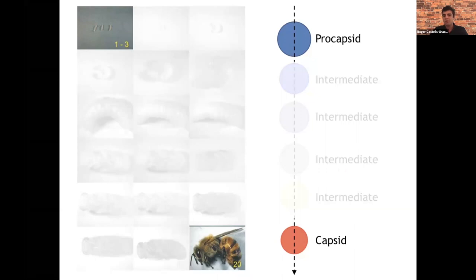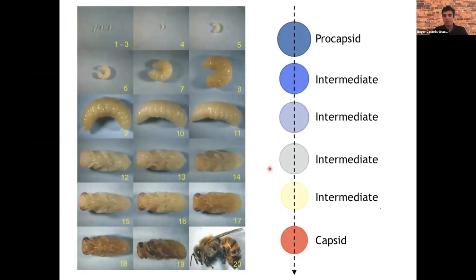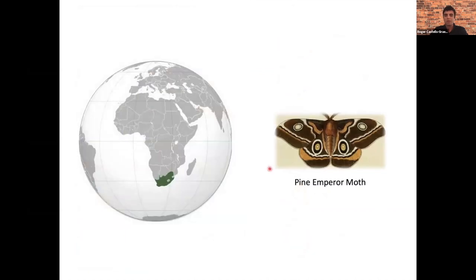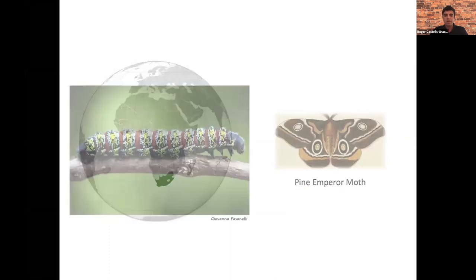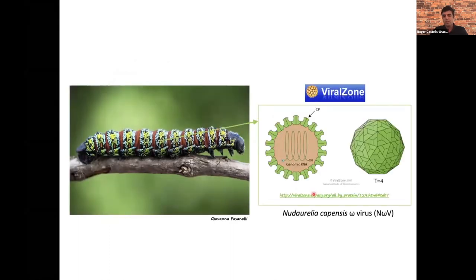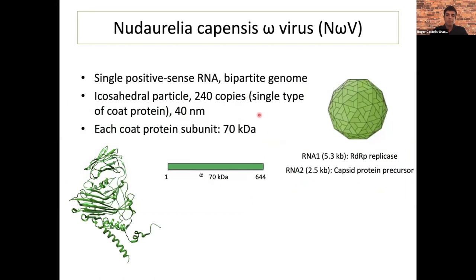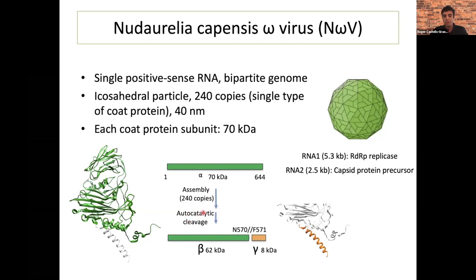With this project, we wanted to have the full picture of the whole maturation process. We used a virus from a moth from South Africa called the pine and pearl moth. The larvae of this moth can be infected with a virus called Ndarelia carpensis omega virus, also known as N-omega-V. N-omega-V is a virus with single positive-sense RNA. It's icosahedral and has 240 copies of one kind of coat protein. During maturation, this coat protein undergoes an autoproteolytic cleavage, which generates a small lytic peptide.